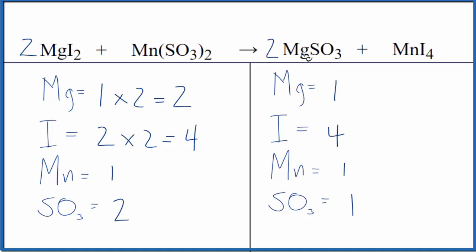We could just put a two in front of the MgSO3, the magnesium sulfite. One times two, that would balance the magnesium atoms, and then two times the one sulfite here. That would give us two of those, and we'd be done. This equation is balanced.